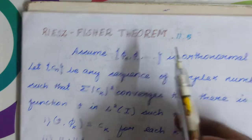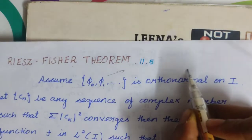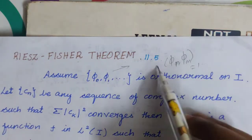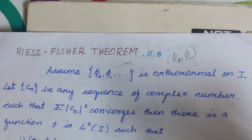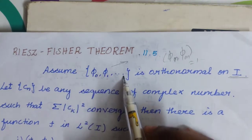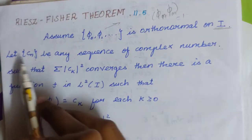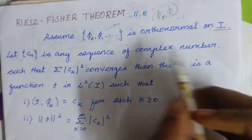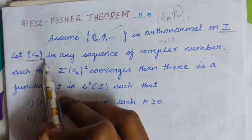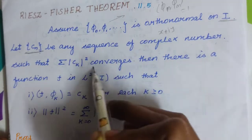Assume φ₀, φ₁, and so on — φ₀ to φ₁ is orthogonal. The orthonormal condition: ⟨φ₁, φ₁⟩ is equal to 1, so that orthonormal condition is satisfied. On I, which is an interval, we have a set of functions that is orthonormal. Let c be any sequence of complex numbers — in the format x plus iy — denoted cₙ, such that the summation of |cₖ|² converges.